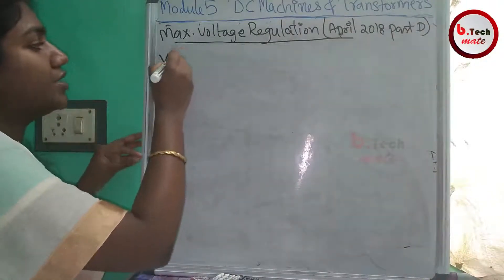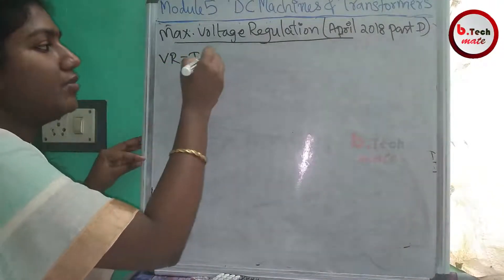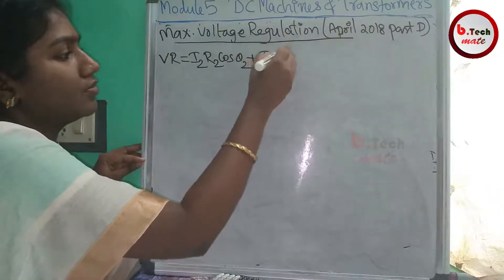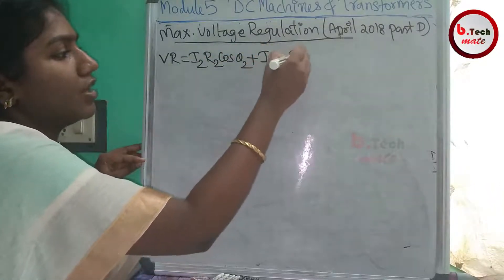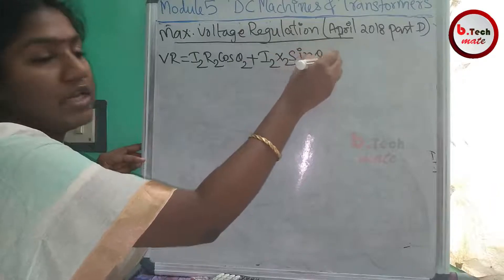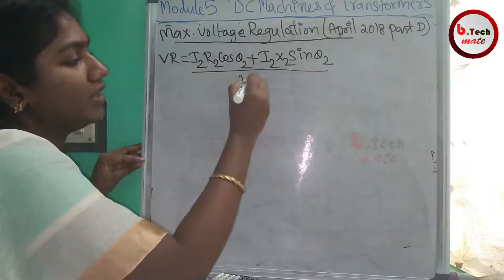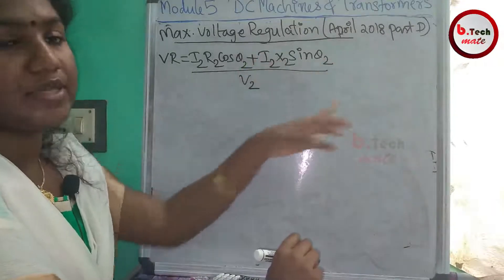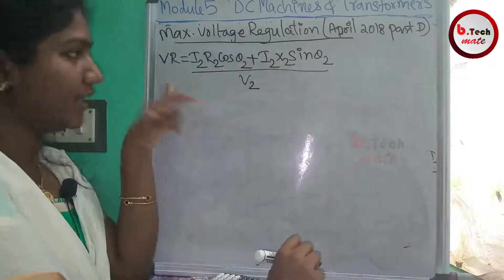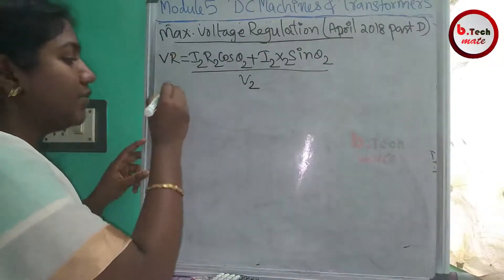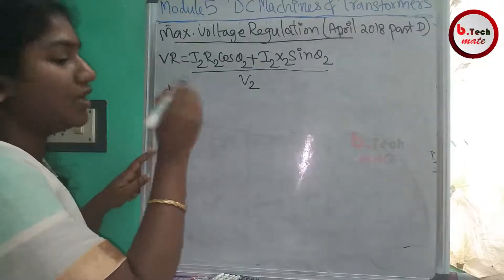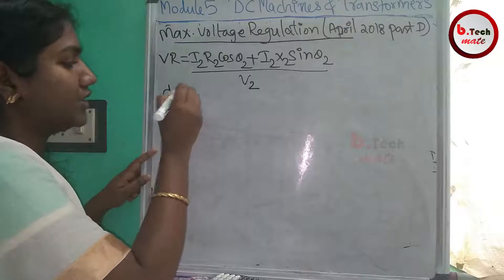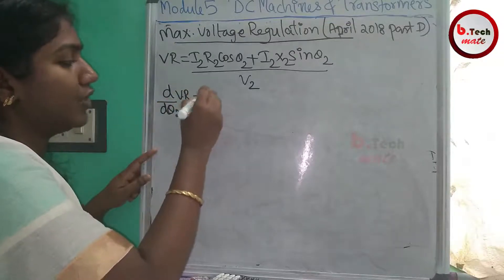We have an equation for voltage regulation, and we again consider the lagging power factor case, since leading power factor is practically possible while pure lagging conditions are considered here. The voltage regulation is: (I₂R₂ cosθ₂ plus I₂X₂ sinθ₂) divided by V₂. For maximum voltage regulation, we set the derivative equal to zero.